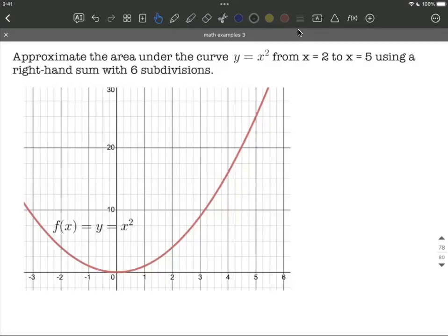Let's attempt to approximate the area under the curve y equals x squared between x equals 2 and x equals 5 using right hand sums with six subdivisions.